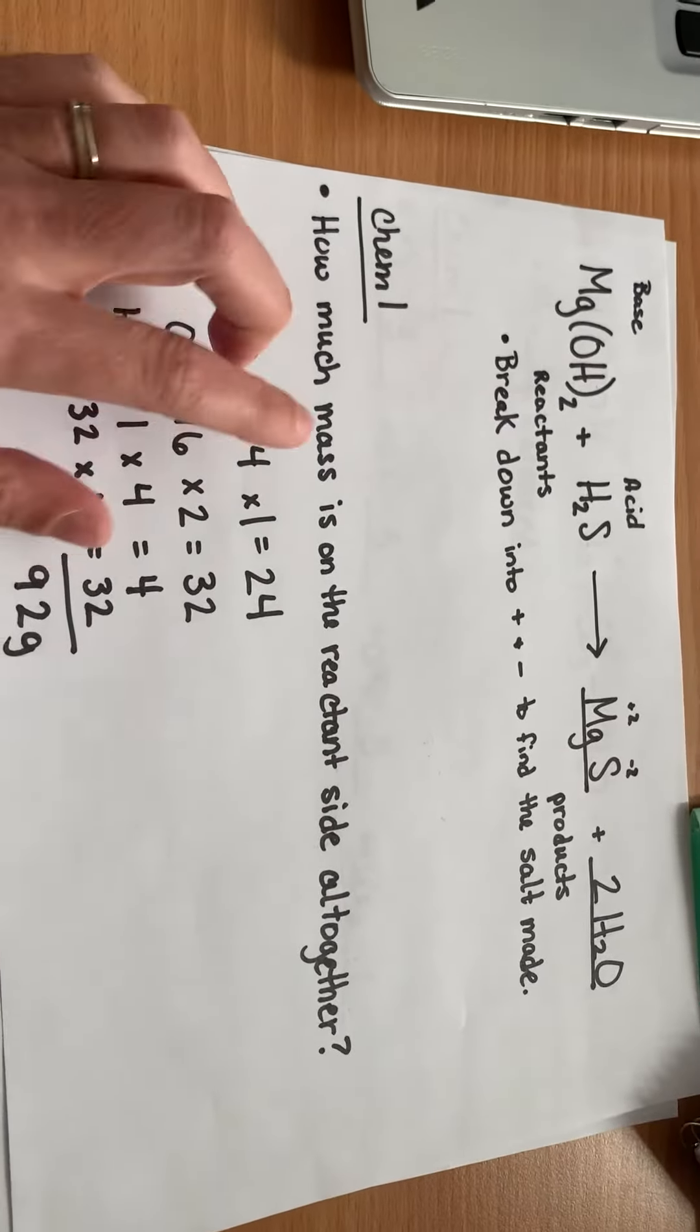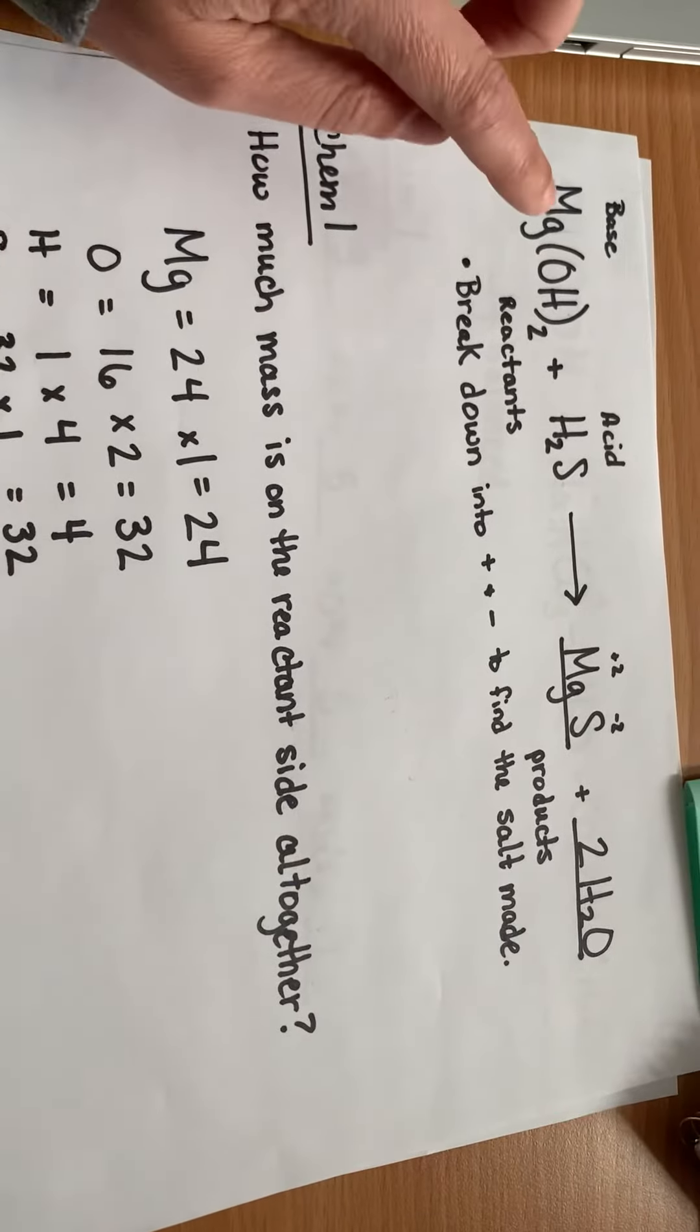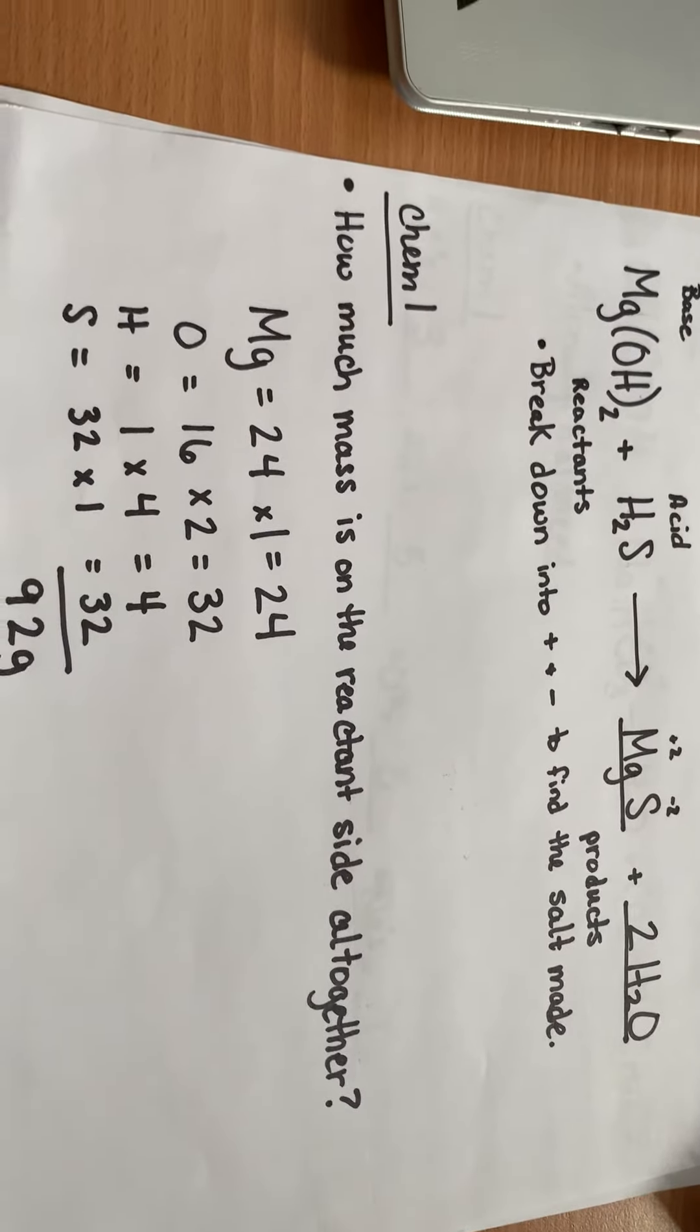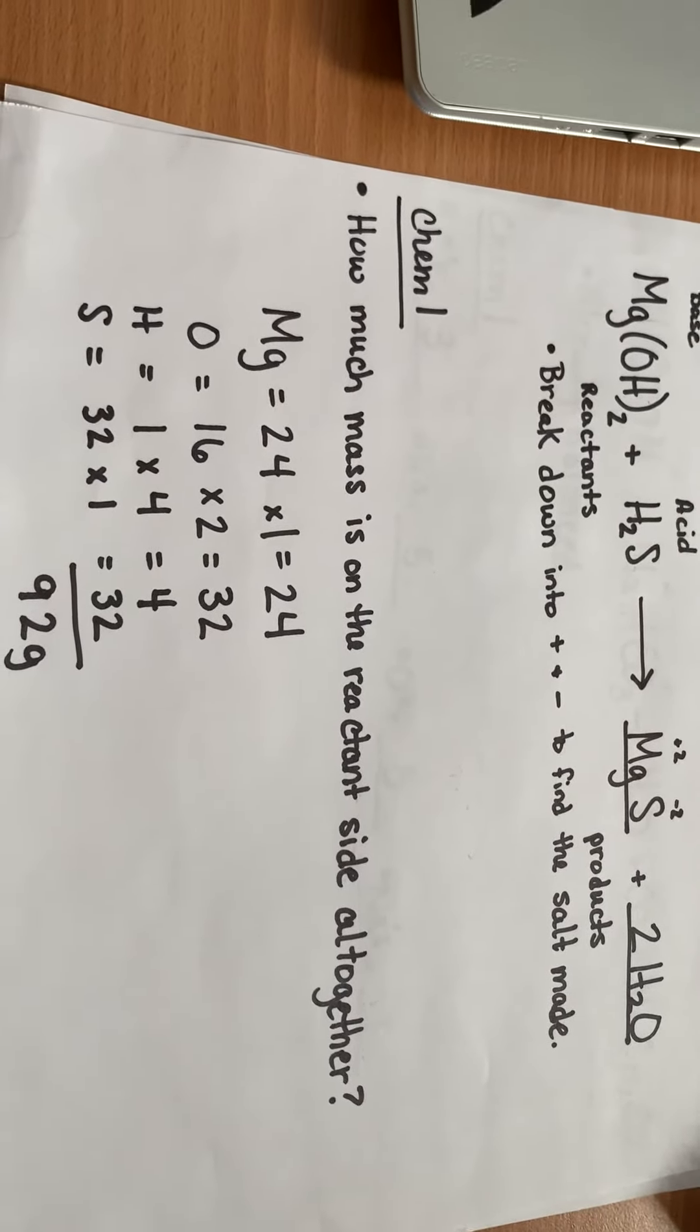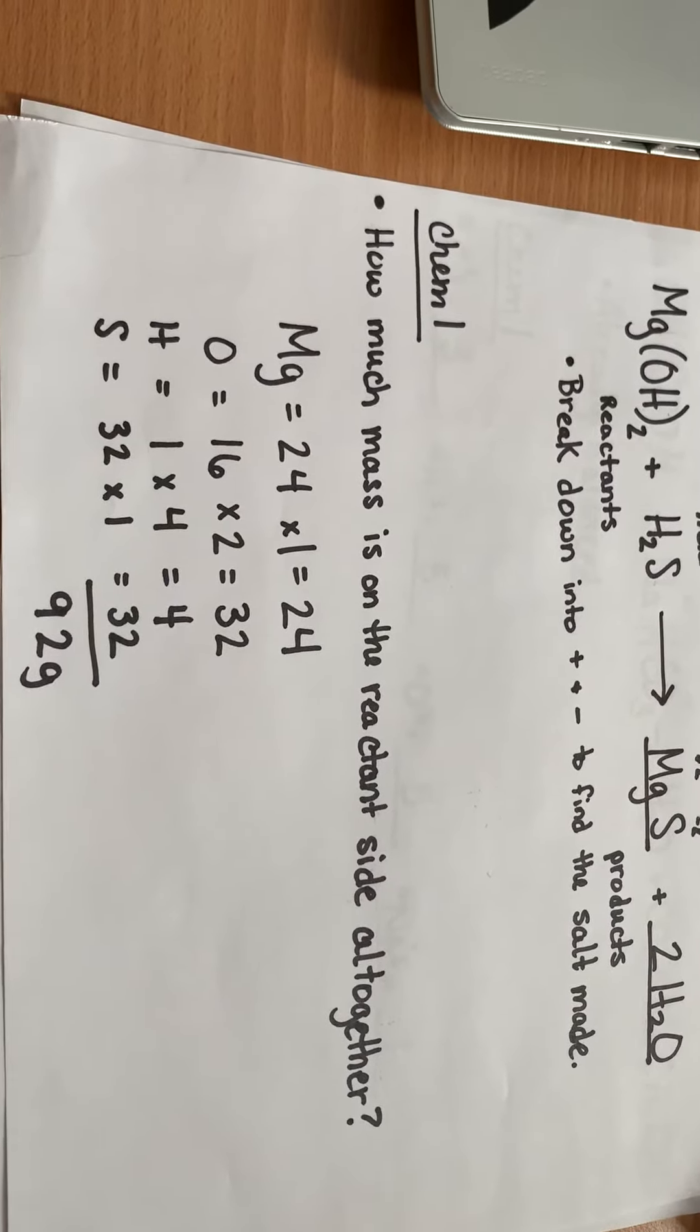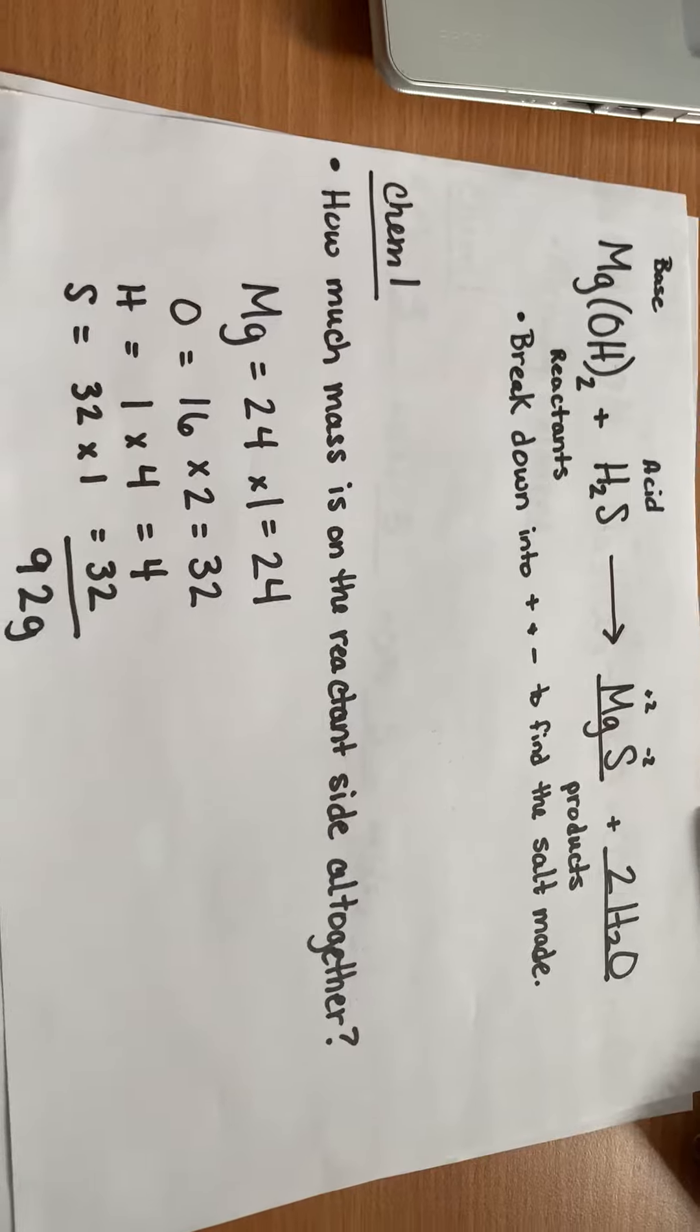So if we're looking at this, we have magnesium, which weighs 24, and there's one of them on the reactant side, so that's just 24. Oxygen weighs 16, and there are two of them, so that's 32. Hydrogen has a mass of one, and there are four of them, so that would be four. And then sulfur has a mass of 32, and there's only one of them. So when you add all that up, that is 92 grams.